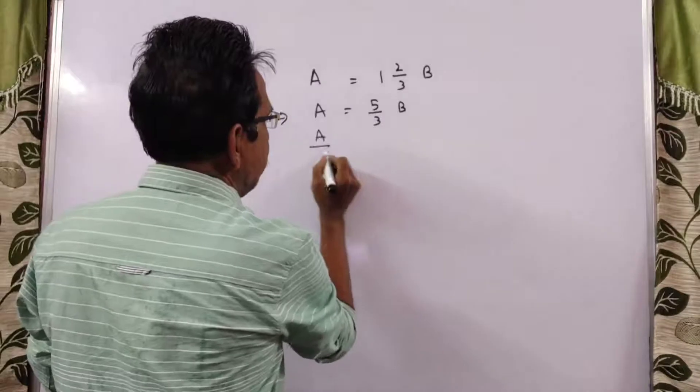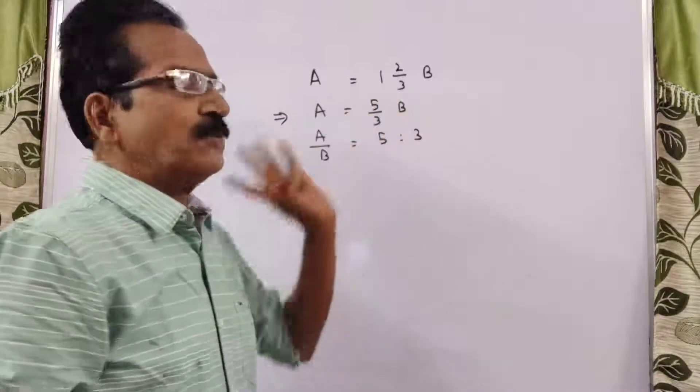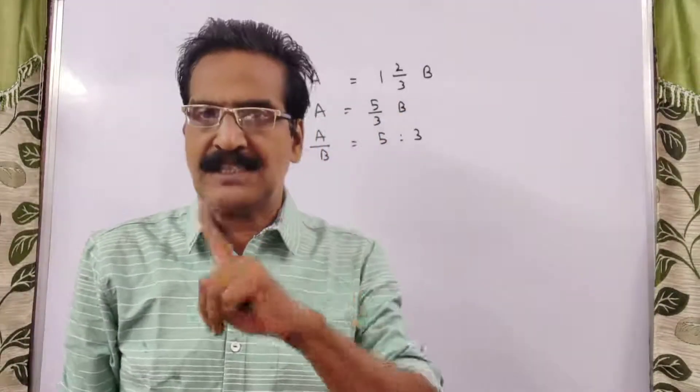That is, A to B, the speed ratio is 5 to 3.